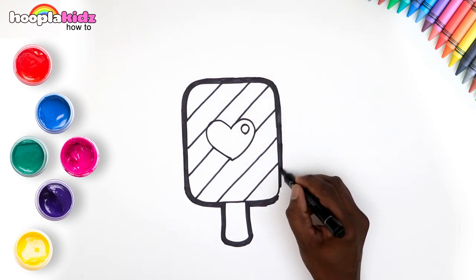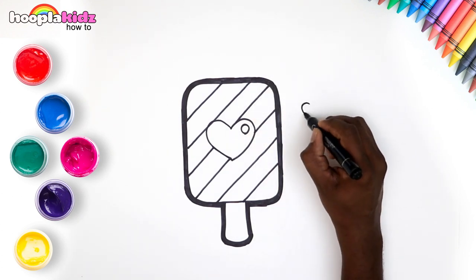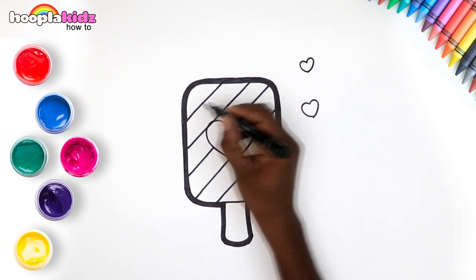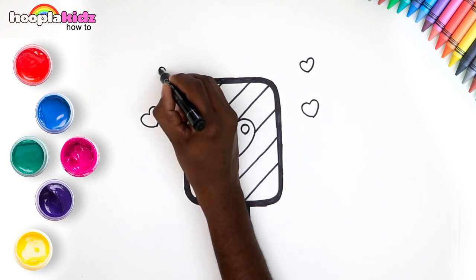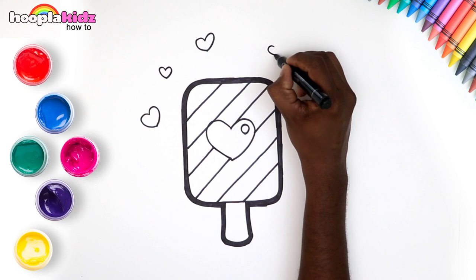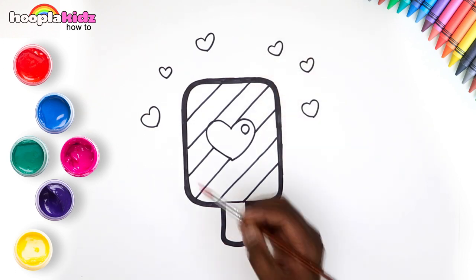Let's add an outline. Yes, just keep it nice and neat. Now draw some hearts around. Because that's how much we love yummy popsicles.